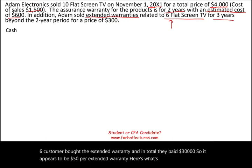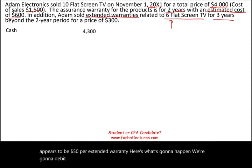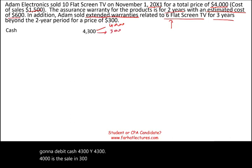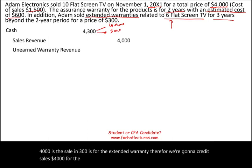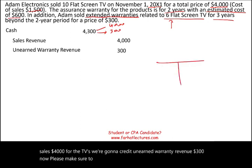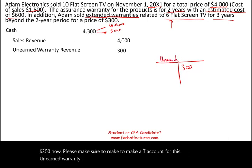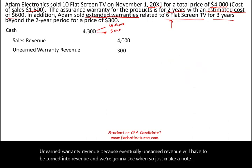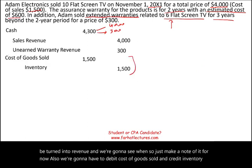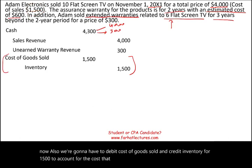Here's the first journal entry: debit cash $4,300 — $4,000 for the TVs plus $300 for the extended warranty. Credit sales $4,000 and credit unearned warranty revenue $300. Make note of that unearned warranty revenue account, because it will be earned over time. Also, debit cost of goods sold and credit inventory $1,500 to account for the cost Adam incurred to purchase those TVs.